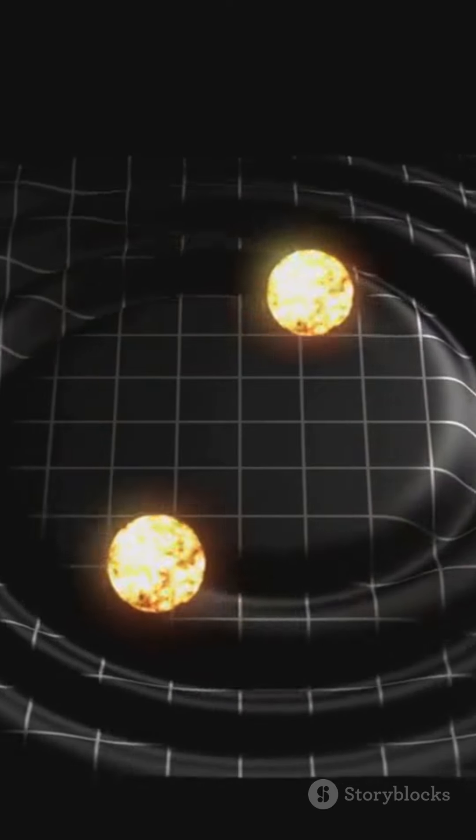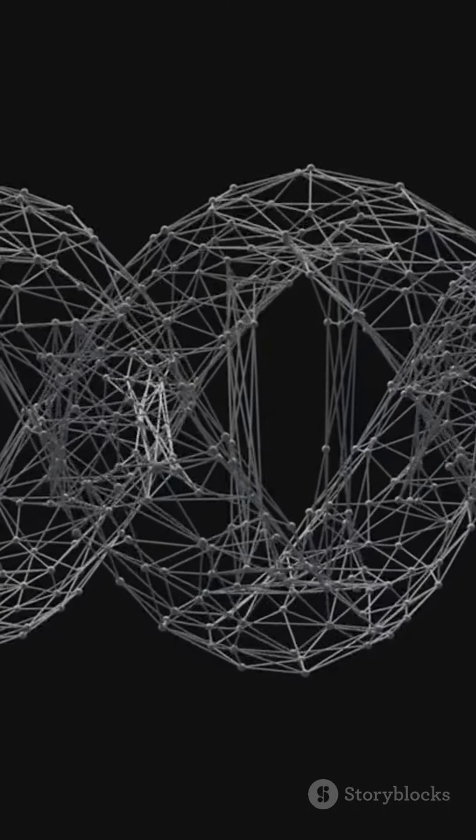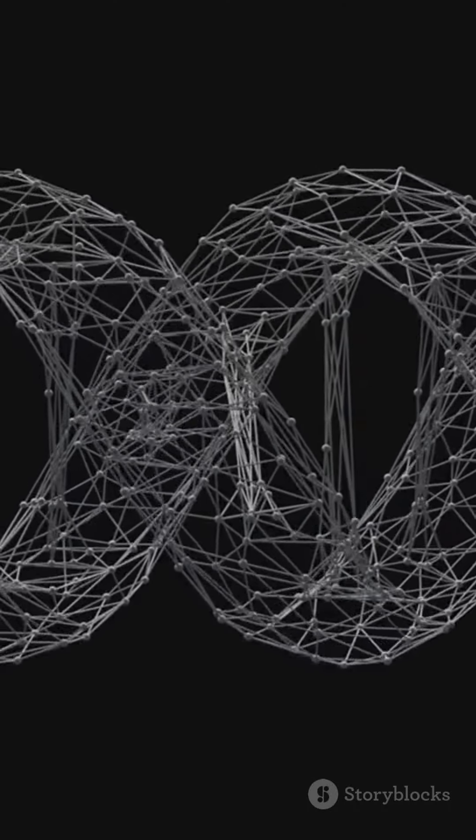Think of these generators as the rules that govern how strings vibrate. In Type IIA, these generators have different handedness. This means the vibrations move in opposite directions, like a two-way street.